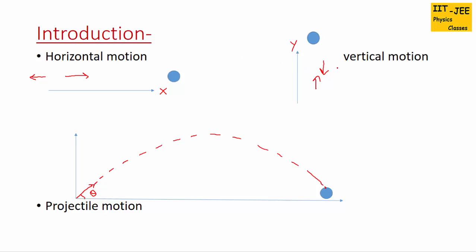Horizontal and vertical motions are one-dimensional motion because they involve either the x-axis or y-axis, while projectile motion involves both x and y directions. So it's two-dimensional motion.